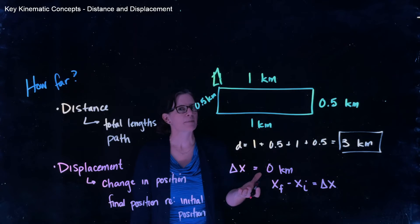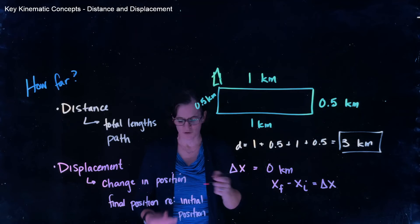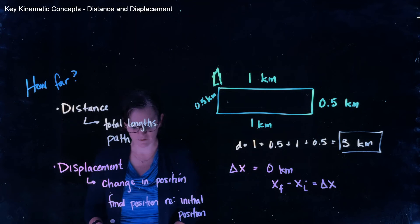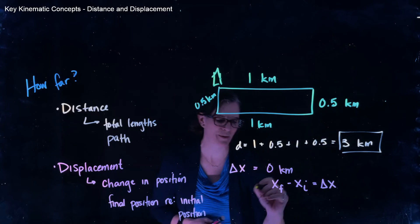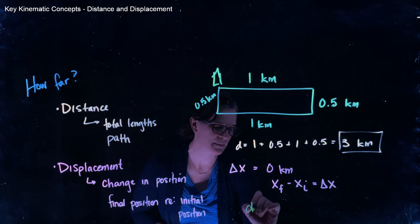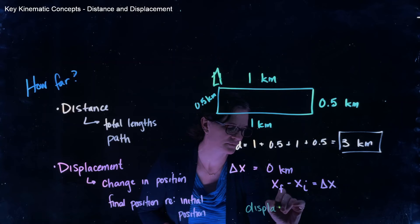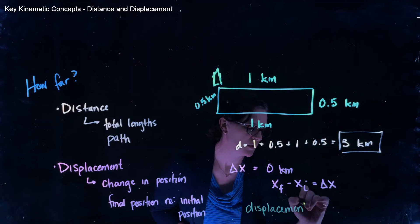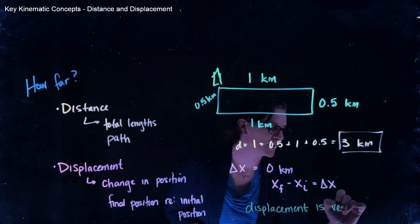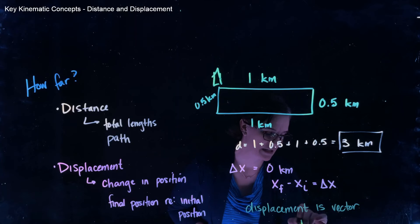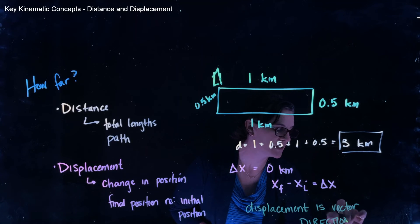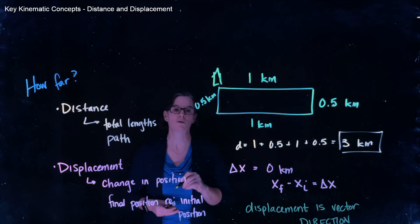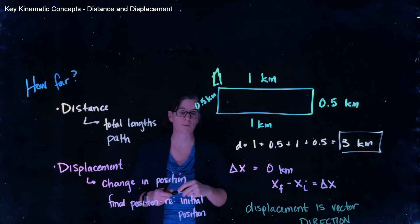Now, displacement is a vector. So remember we talked about, and if you haven't reviewed what a vector was, go back and look at those lectures about vectors. Displacement is a vector, which means we have to consider direction. And this is going to become very important as we continue to work through our description of kinematics.